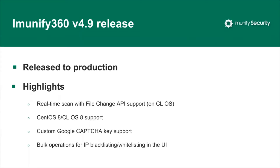Let's get started with version 4.9. It has been released to production and it's already available for installation — luckily, most of you are already using it. I'd like to highlight four main changes: new File Change API with support for real-time scan, CentOS 8 and CloudLinux 8 support, custom Google ReCAPTCHA key support, and bulk operation for IP management — blacklisting, whitelisting and some others.